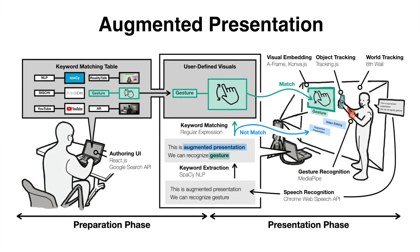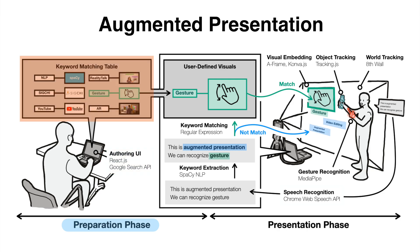We introduced the concept of augmented presentation by dividing the workflow into two phases: the preparation phase and the presentation phase. During the preparation phase, the system provides an authoring user interface to allow users to register keywords and associated visuals using a keyword-matching approach. Then, user-defined visuals can appear on the screen based on spoken keywords during the presentation.